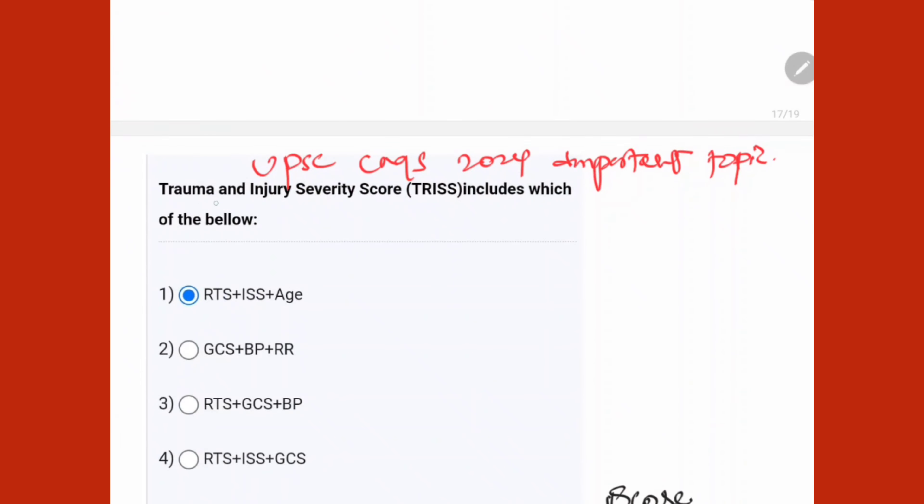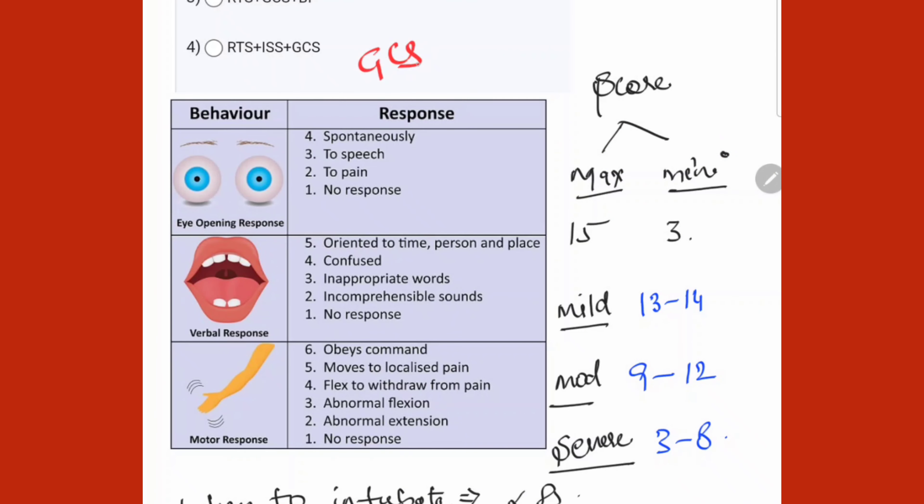So what question came? TRIS includes which of the following below? So answer is A, right?